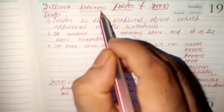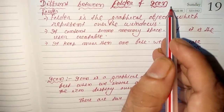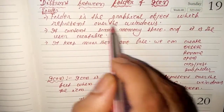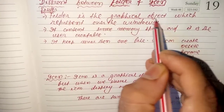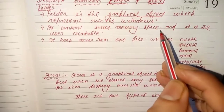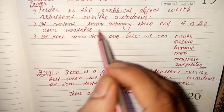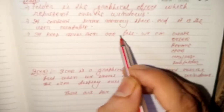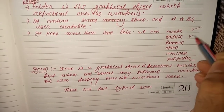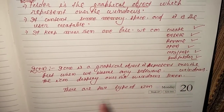Today the topic is the difference between folder and icon. Both are graphical objects. A folder is a graphical object which represents over the Windows. It contains some memory space, it is user creatable, and it keeps more than one file. We can create, delete, rename, open, copy, paste, and create a subfolder — we discussed this in the previous class.